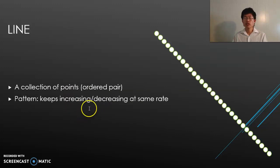Alright, so here's a description of a line. It's a collection of points, sometimes called ordered pairs. You have a bunch of points and you make a line. The pattern is it keeps increasing or decreasing at the same rate. Think of these points or dots—you can see it's going down at a constant rate or going up this way.